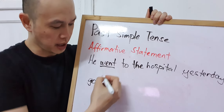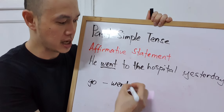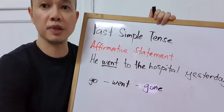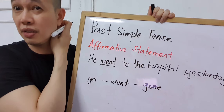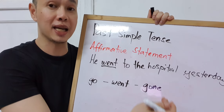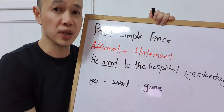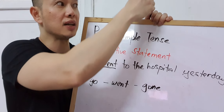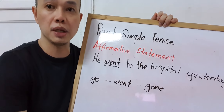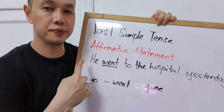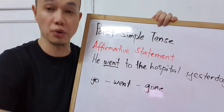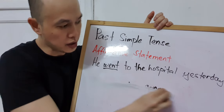'Go' conjugates this way: 'go' is the base form, 'went' is the past form, and 'gone' is the past participle form. 'Go' is actually an example of an irregular verb, so it conjugates this way. For irregular verbs you need to memorize the forms. For regular verbs it's easy — you only add 'd,' 'ed,' or 'ied' for the past form and past participle. So you need a verb list for the irregular verbs.